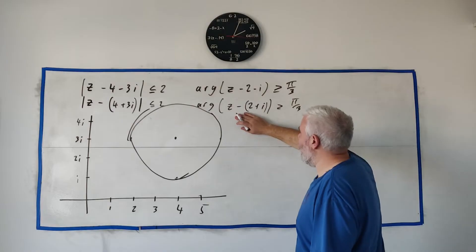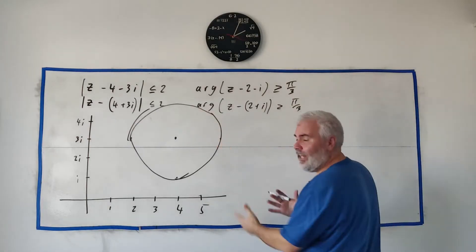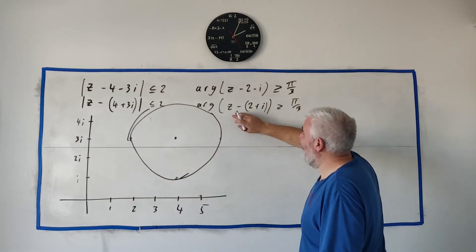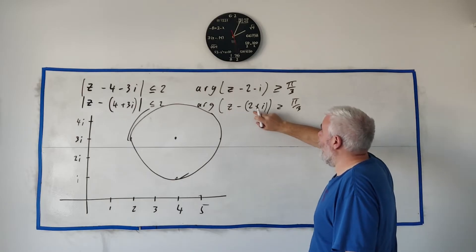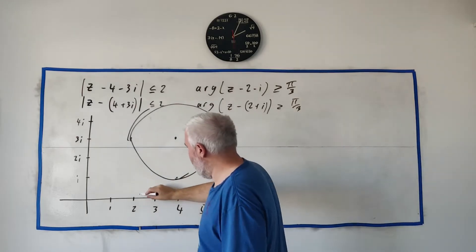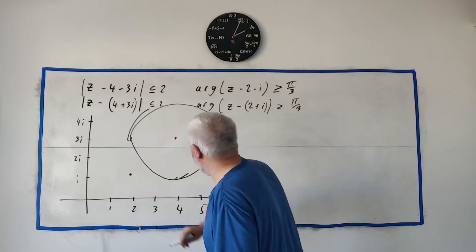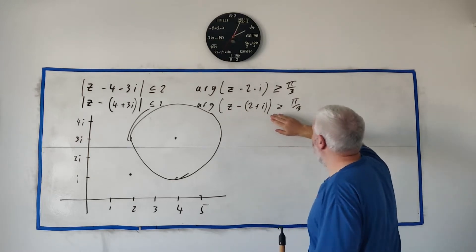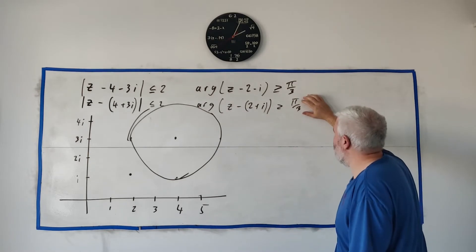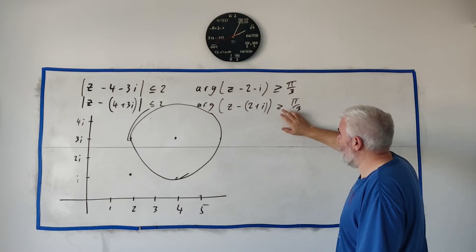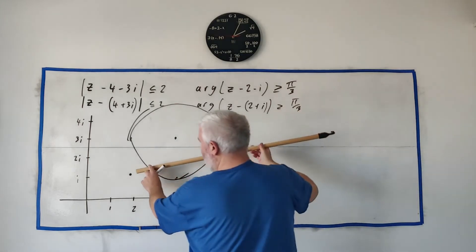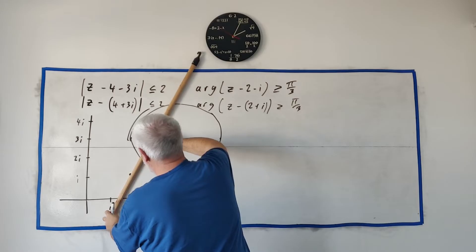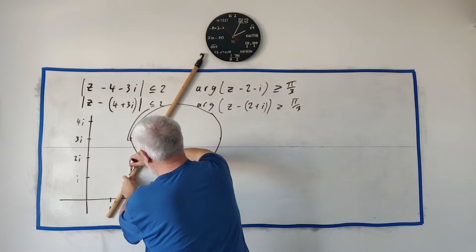Now what about the argument? The argument says, the argument is the angle. Usually the argument of a number usually comes from 0. In this case it's the argument, it's the angle made between a point and 2 plus i. 2 plus i is here. So they're just saying that there's a point Z that makes an angle greater than pi over 3. Remember pi over 3 is 60 degrees. Once again we assume this is an equals and we put this point here and we go to 60 degrees.